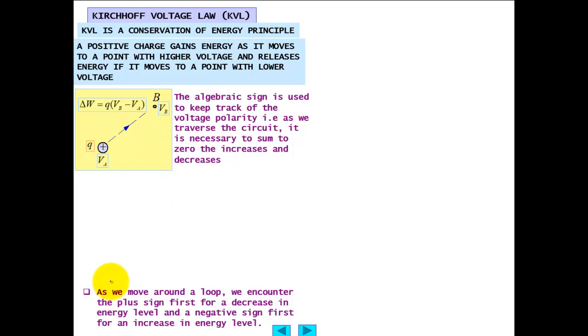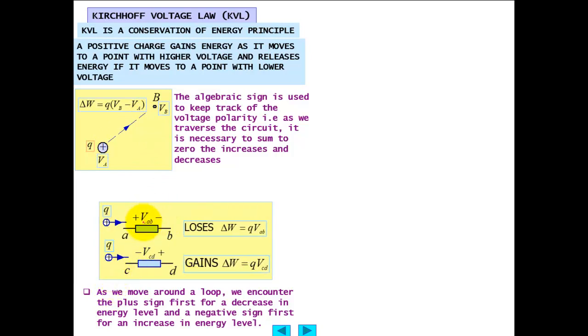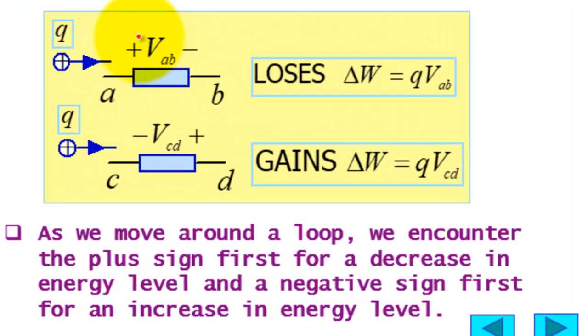When this positive charge is moving from low to high, it gains energy. So usually the gain would be adjusted as a negative sign here.